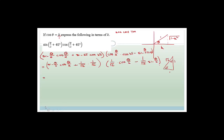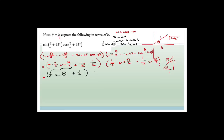Do you agree that sin 2a can be rewritten as 2·sin a·cos a? So a half of sin 2a equals sin a·cos a. If we have θ/2 and θ/2, then sin(θ/2)·cos(θ/2) equals a half·sin θ. Taking out a common factor of a half, we have a half·sin θ plus a half times 1/√2, times cos(θ/2) minus sin(θ/2).